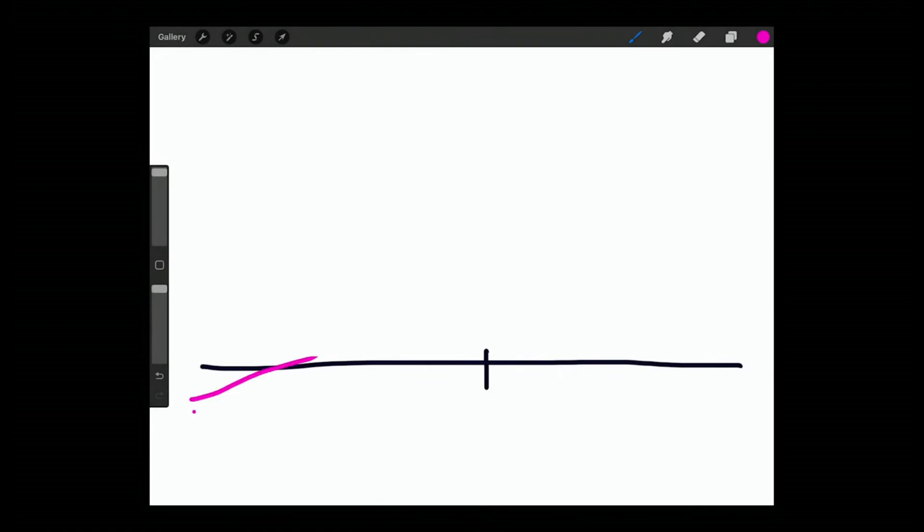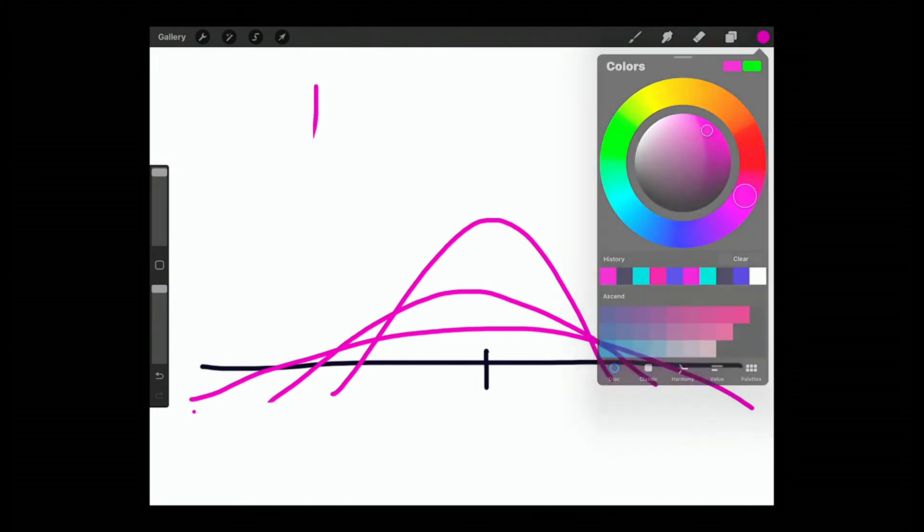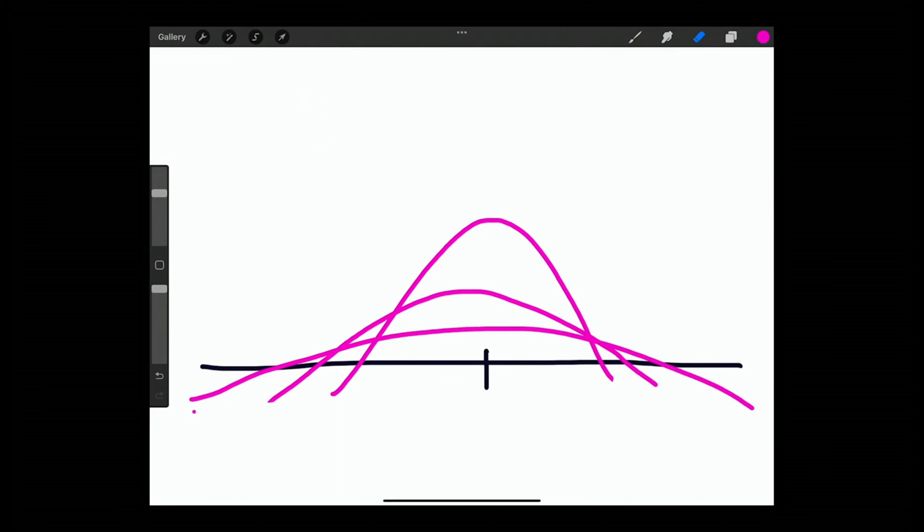When we first start, it looks something like this, and then as time goes on it starts doing this and that. One thing you may notice is that if price is sitting somewhere around here, or here, or here, we're going to be at different places on this curve.